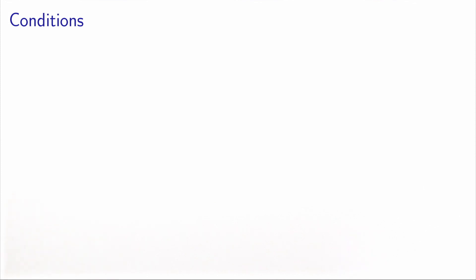There are three conditions that are sufficient to guarantee the convergence of Newton's method. The first one is that the function f must not be too non-linear. This makes sense because Newton's method relies on a linear model of the function. If the function is really badly non-linear, this linear model will be of poor quality, and the method may not work well.